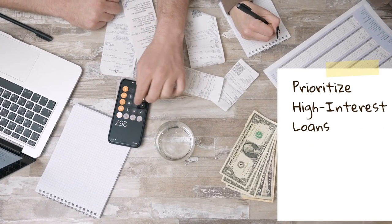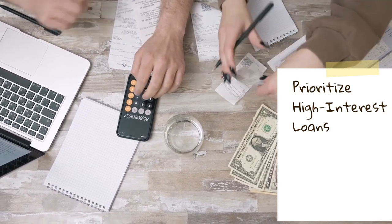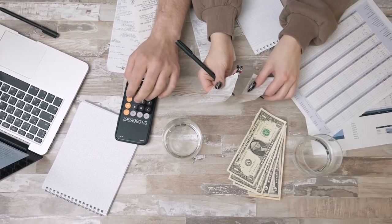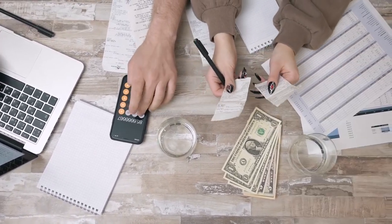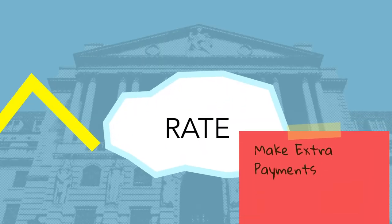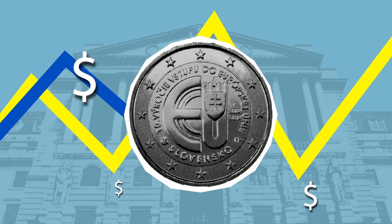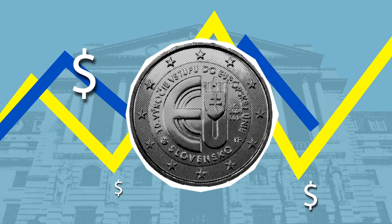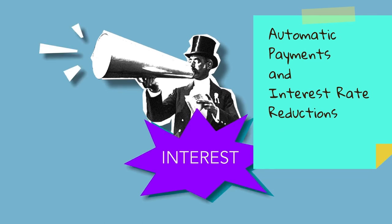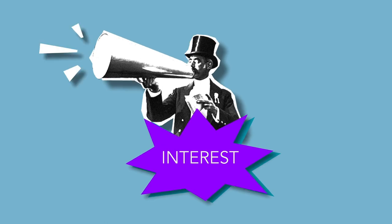Prioritize High Interest Loans. If you have multiple loans, consider prioritizing the repayment of high-interest loans to save money on interest payments over time. Whenever possible, make extra payments to reduce the principal amount and save on interest. Enroll in automatic payments to ensure on-time payments and, in some cases, receive interest rate reductions.